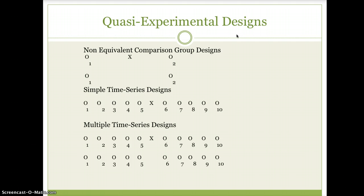The dependent variable is assessed before and after an intervention and is introduced to one of the groups. The comparison group does not receive the intervention. It is also possible to use multiple pretests to strengthen the validity of non-equivalent comparison group designs.